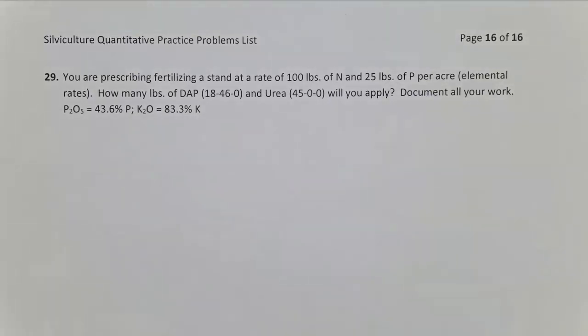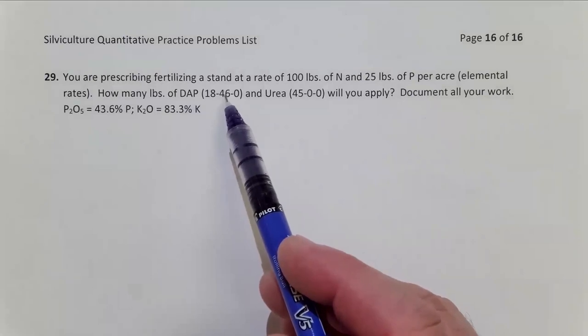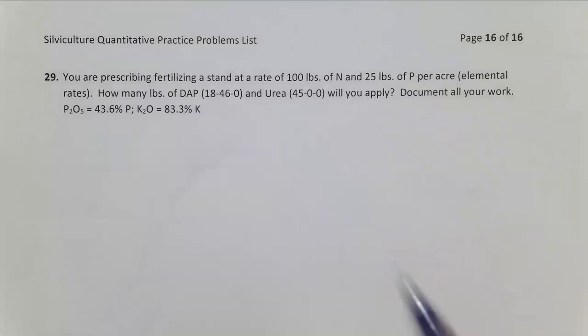And so whenever you're applying DAP, it tends to contain more phosphorus than nitrogen. So DAP usually is used to meet the phosphorus rate, but it also applies some nitrogen.